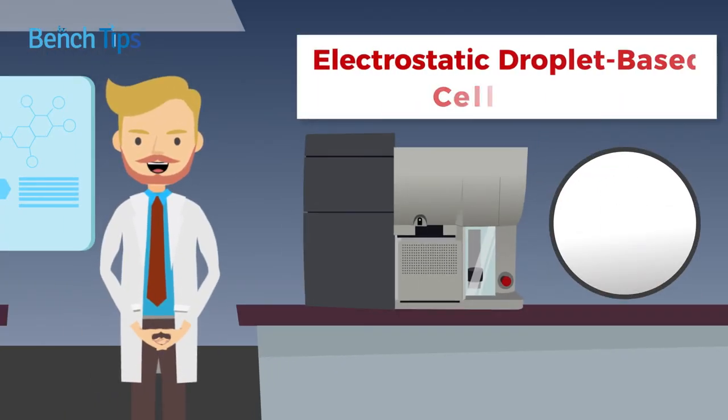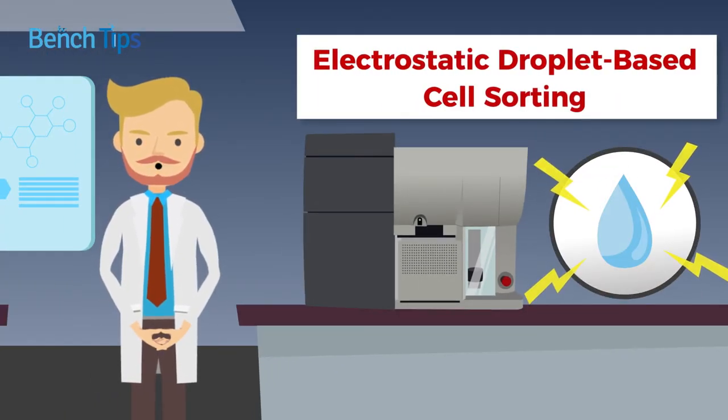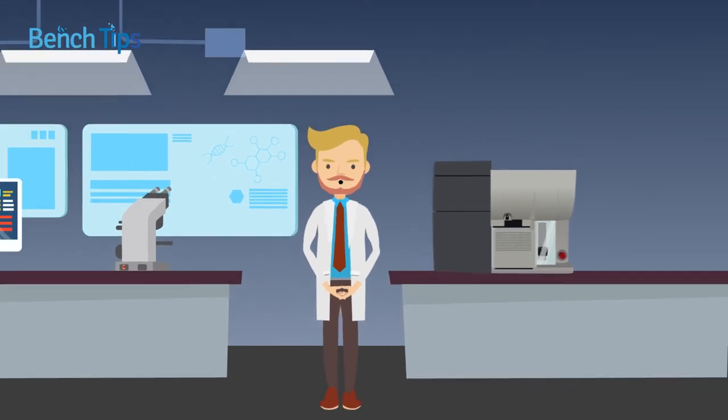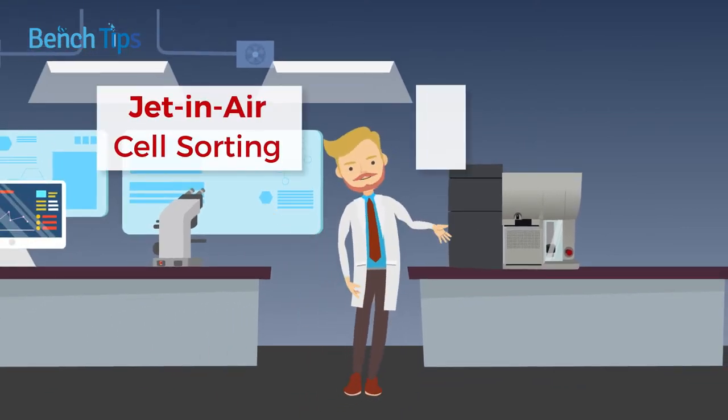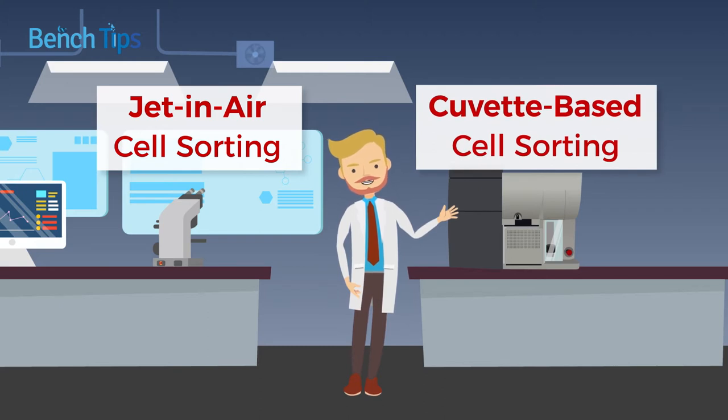This technique, known as electrostatic droplet-based cell sorting, can be broadly divided into two categories: jet and air cell sorting or cuvette-based cell sorting, depending on the nature of the flow cell.